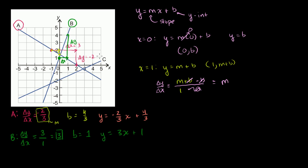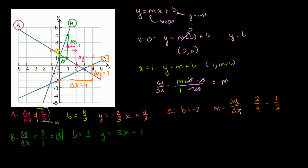Let's do line C. Let's do the y-intercept first — you can see immediately that when x is equal to 0, y is negative 2. So b is equal to negative 2. And then the slope: m equals change in y over change in x. Starting at the y-intercept and moving 4 to the right, our change in x is 4 and our change in y is positive 2. So the slope is 2 over 4, which equals 1 half. The equation is y is equal to 1 half x minus 2.